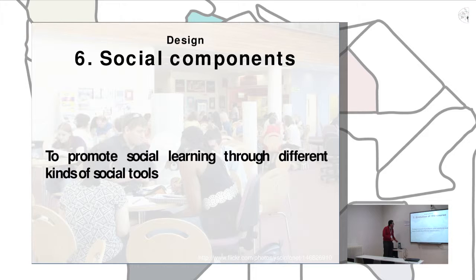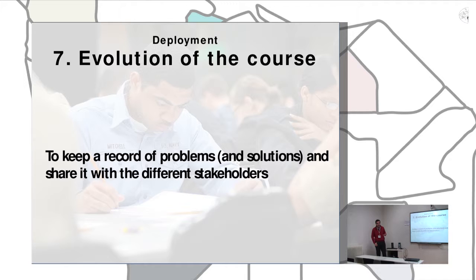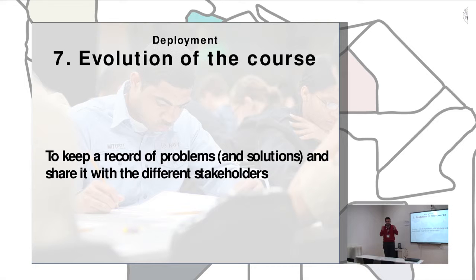Two more things about deployment and inclusion of the course: we are all learning and making MOOCs, so there are errors and things that go wrong. It's important to note them down, see how you solve them, and share the solutions with all stakeholders — not only the teachers, but also audio-visual technicians, library staff, and institutional staff. There are many stakeholders when you create a MOOC, so try to share everything with everybody so they are aware of problems and solutions.